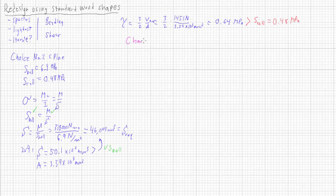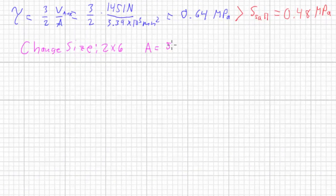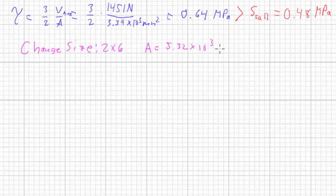So we need to do something different. We need to change the size. When I said we had to iterate, this is what I'm talking about. Let's bump it up to a 2 by 6. A 2 by 6 will give us a section modulus of 124,000 and an area of 5.32 times ten to the third square millimeters. This should work.